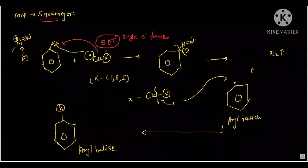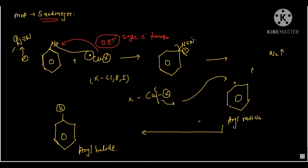The Sandmeyer reaction follows a free radical mechanism because of the formation of the aryl radical. The reaction is actually a two-step process: first, the synthesis of the aryl halide from a primary aromatic amine involves the formation of a diazonium salt — that is the first step. Then there is a transformation of the diazo intermediate into the aryl halide, where the diazonium is converted to the aryl halide by displacement with a nucleophile. The nucleophile can be a halide anion, cyanide, or water.